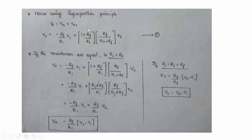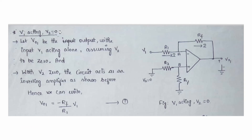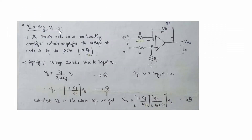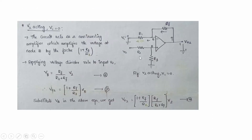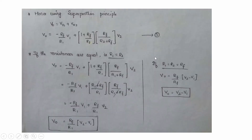By superposition, Vo = Vo1 + Vo2 = −(Rf/R1)×V1 + (1 + Rf/R1)×(Rf/(R2+Rf))×V2. If R1 = R2 (input resistances are equal) with Rf different, simplification gives Vo = (Rf/R1) × (V2 − V1). If all resistances are equal (R1 = R2 = Rf), then Vo = V2 − V1, the pure difference of input voltages.